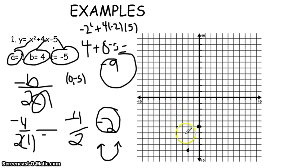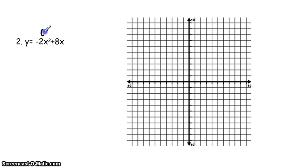To find the last point, use the axis of symmetry. The a value of this problem is negative 2, the b value is 8, and the c value is 0. Plug the numbers back into the equation, negative b over 2a. So it would be negative 8 over 2 times negative 2, which equals negative 8 over negative 4, which reduces to 2.